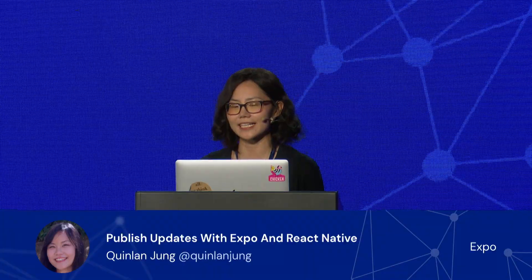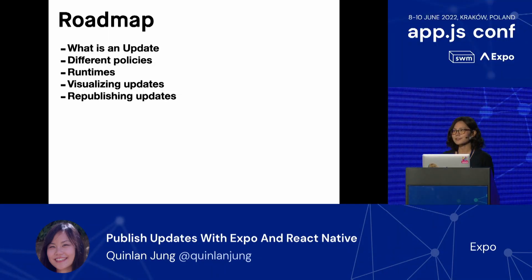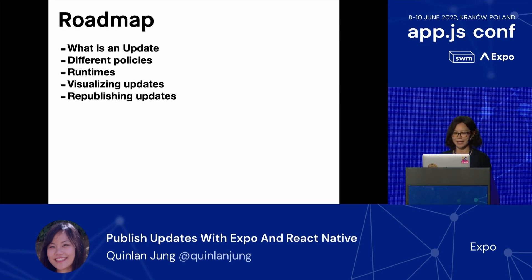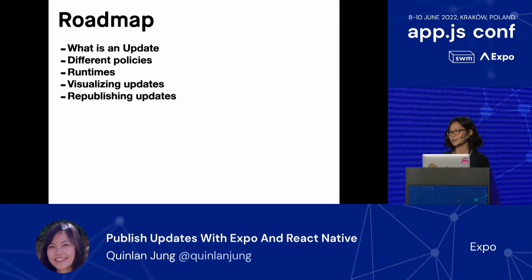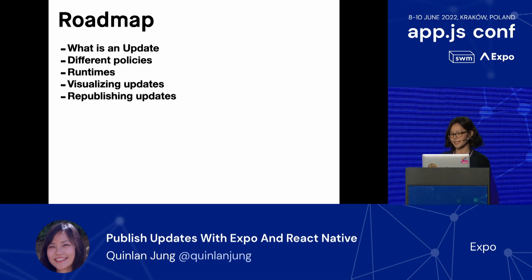On the roadmap for today, I'm going to be talking about what exactly an update is and different policies you can specify to deploy updates to your end users. I'll also be talking about different kinds of app runtimes, and in the case you have many different app runtimes, how to visualize all those updates. And in the case where you make a mistake, I'll also be talking about republishing updates.